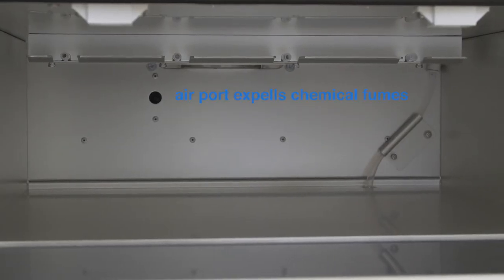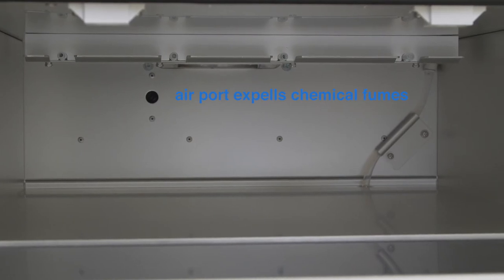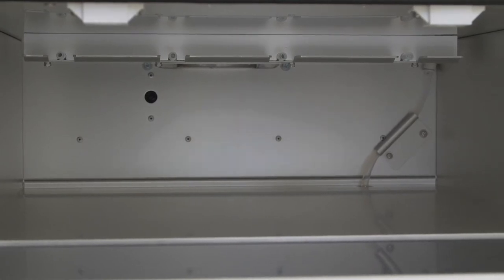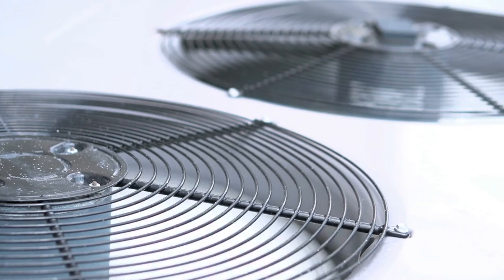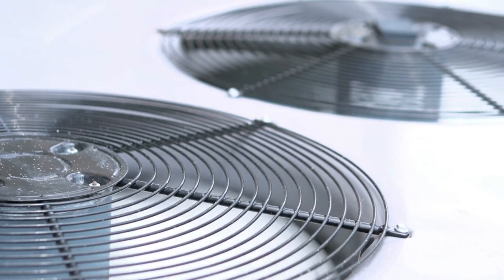The back wall of the oven has an air port to expel the chemical fumes sent through the carbon filters. The fans are constantly degassing the oven. With the door closed, the fans run at a constant speed. When the doors are open, the fan speed will increase to minimize fume exposure to the user.